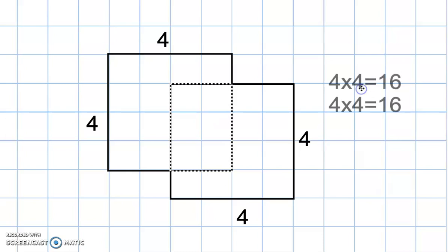So I'm going to find the area of those two squares by themselves. 4 times 4 is 16, and then 4 by 4 is another 16. Since I want to find the total area, we're going to add them up.